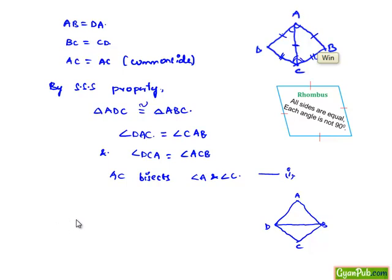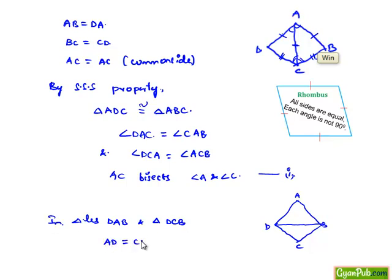In both triangles DAB and DCB, AD is equal to CD, and AB is equal to BC, as all sides in the rhombus are equal.